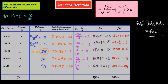Now we compute the summations. Summation of F: 5 + 8 + 15 + 16 + 6 = 50. Summation of FDH: (−10) + (−8) + 0 + 16 + 12 = 10. Summation of FDH²: 20 + 8 + 0 + 16 + 24 = 68.